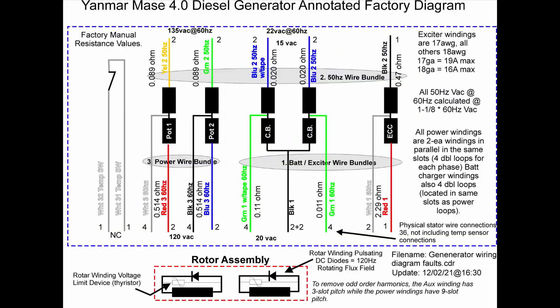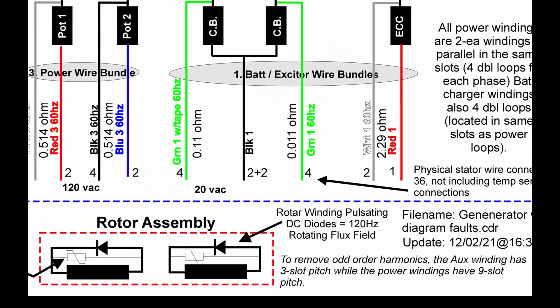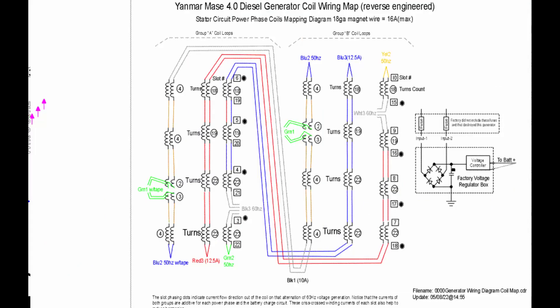After reading through several patents, I discovered that as stated here, to remove odd-order harmonics, auxiliary winding has three-slot pitch, while the power windings have nine-slot pitch. Also the rotor winding pulsating DC diodes equals 120 Hz rotating flux field. So this 120 Hz rotating flux field is what allows the mixing to cause the harmonics. And the third-order harmonic is the worst one. So the slot arrangement of the windings compensates for that.